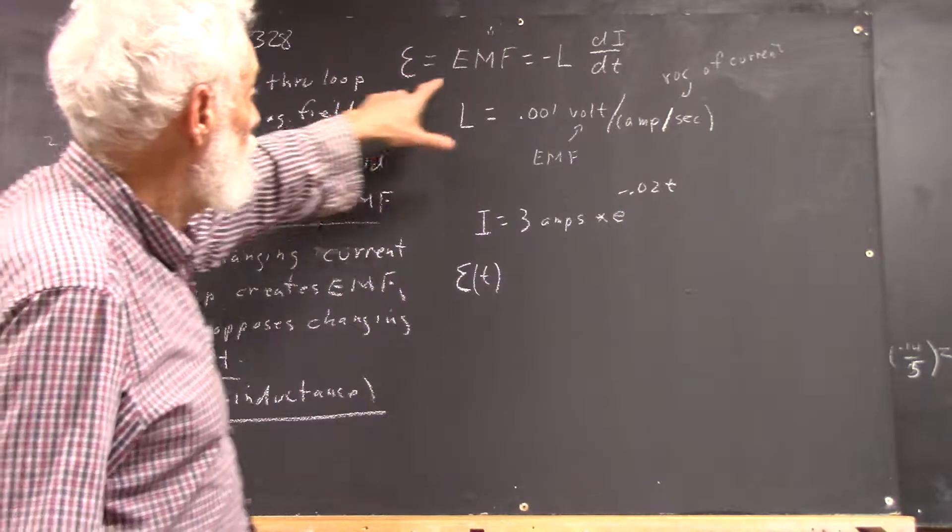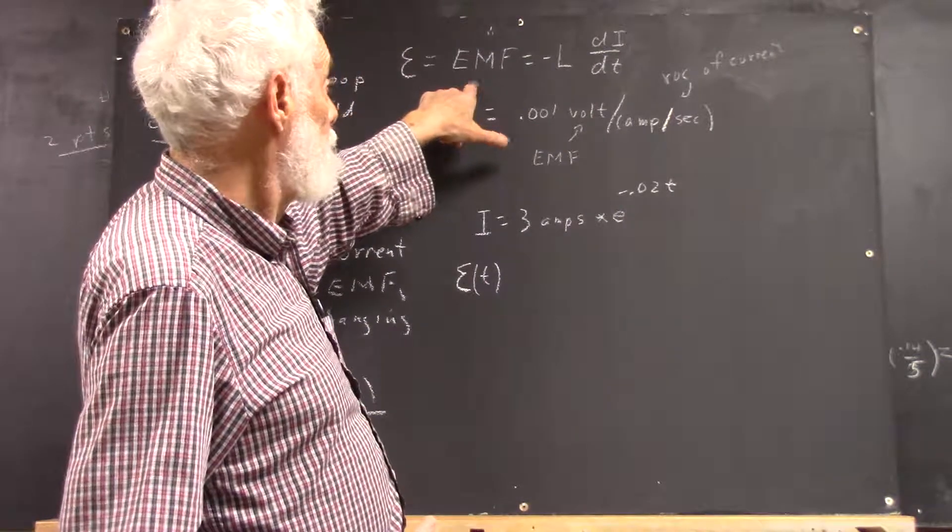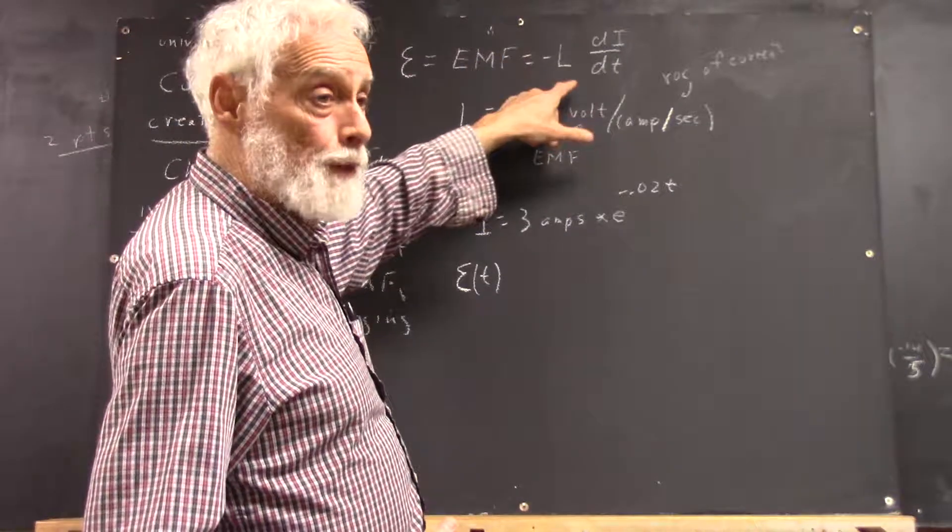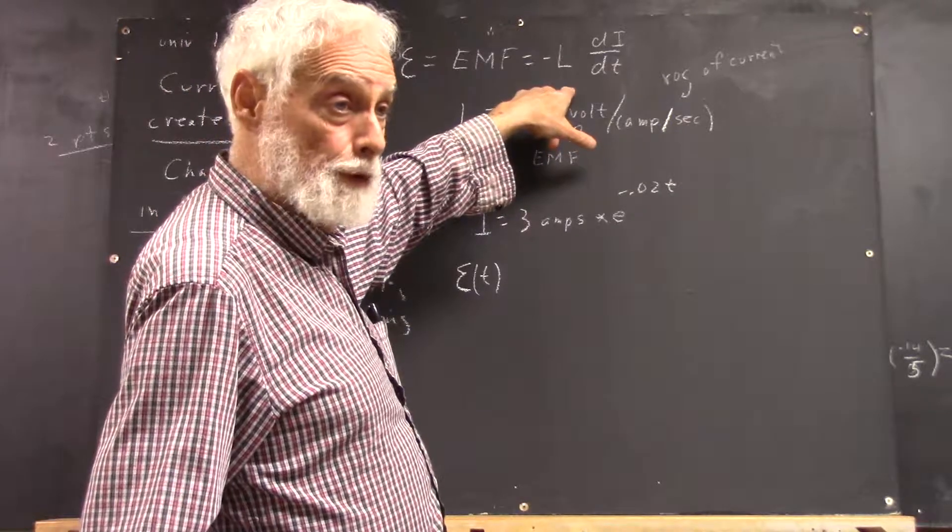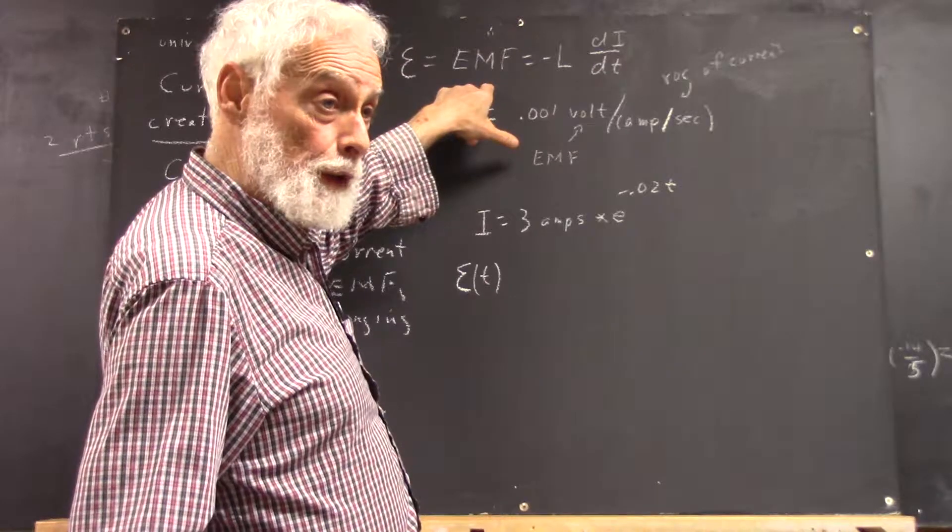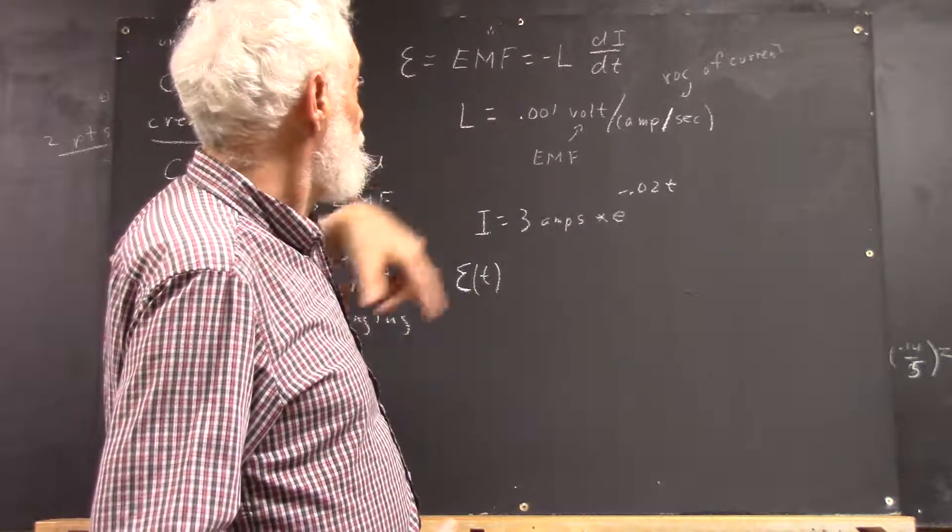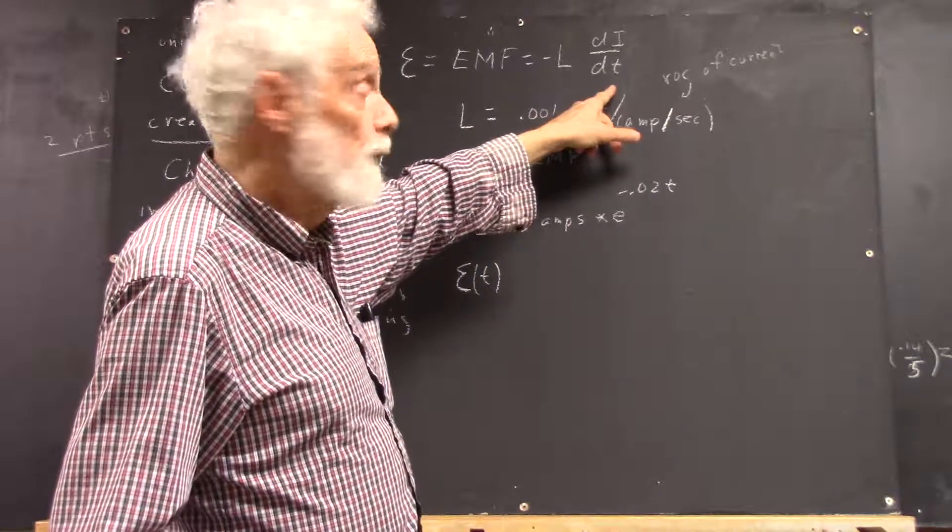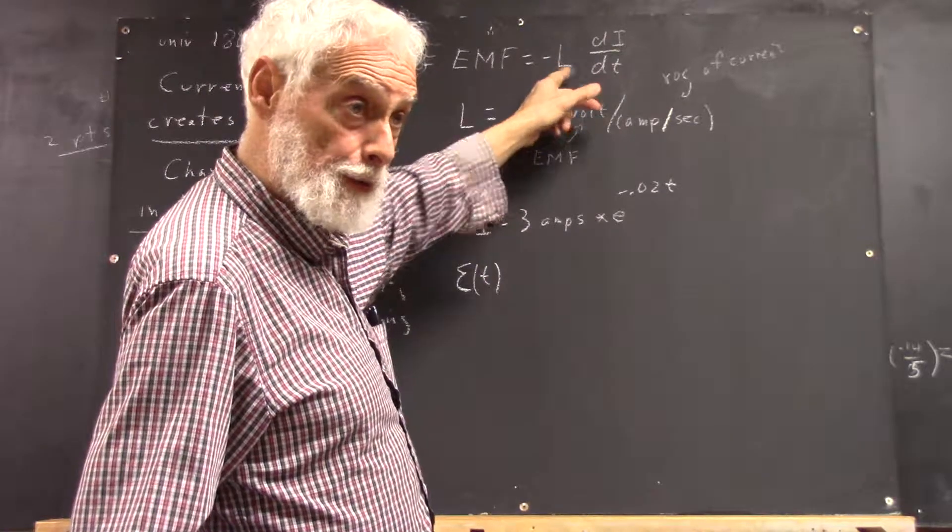So we define inductance. L is your inductance. You multiply that by the rate of change of your current, you get your EMF. And it's opposed to the change in current, which is why you have the minus sign.